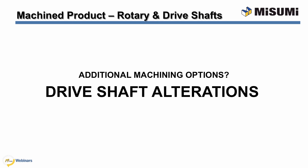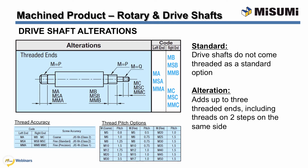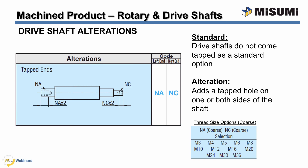Just like rotary shafts, drive shafts sometimes require additional alterations to fit your application needs. Drive shafts offer more complex machining options. The first alteration for drive shafts is threaded ends, which adds up to three threaded shaft ends including two step threads on one end. You can select coarse or fine thread pitch as denoted on the chart. Due to the higher precision required for drive shafts, Misumi publishes the thread accuracy standard rating to ensure proper selection. The tapped end alteration adds a tap to one or both ends of the drive shaft, always with coarse thread.